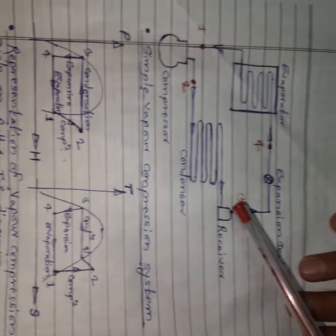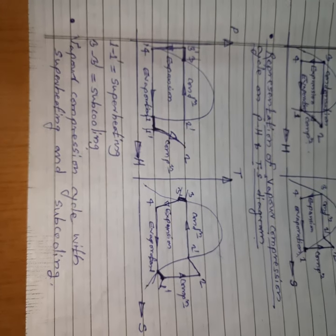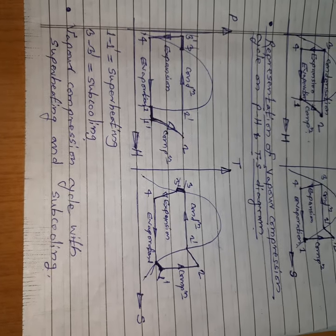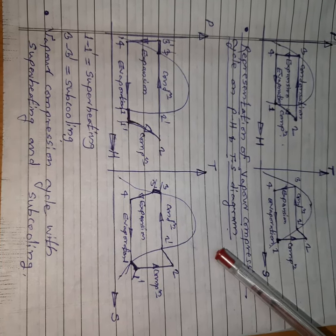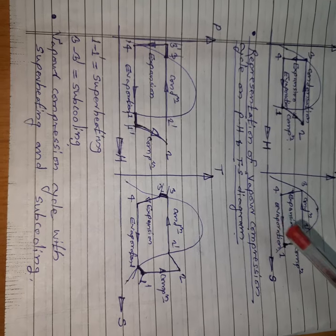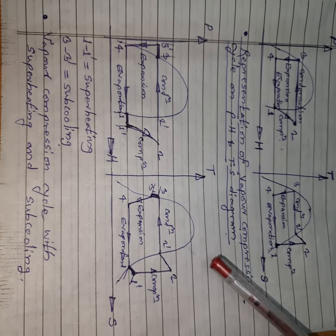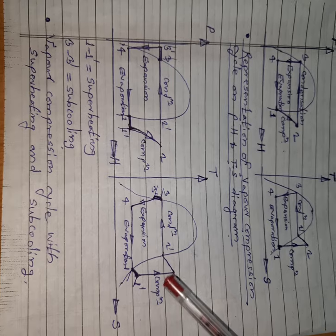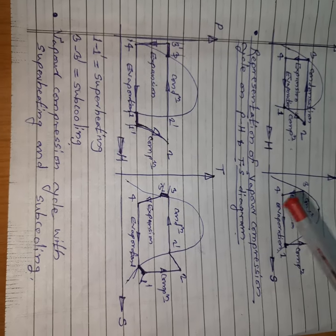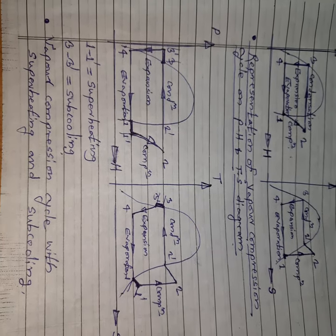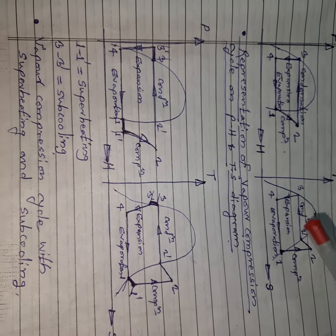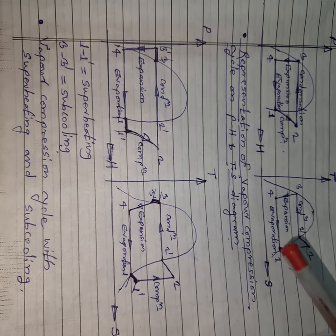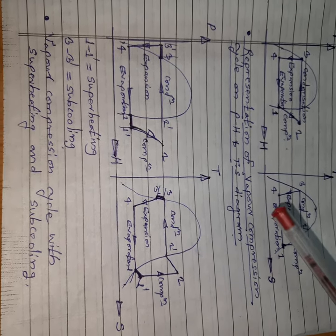In the vapor compression cycle, there are two important terms: superheating and subcooling. Because of superheating and subcooling, the coefficient of performance of the vapor compression cycle increases. Superheating means increasing the temperature of the refrigerant above saturation temperature. Subcooling means decreasing the temperature of the refrigerant below saturation temperature.